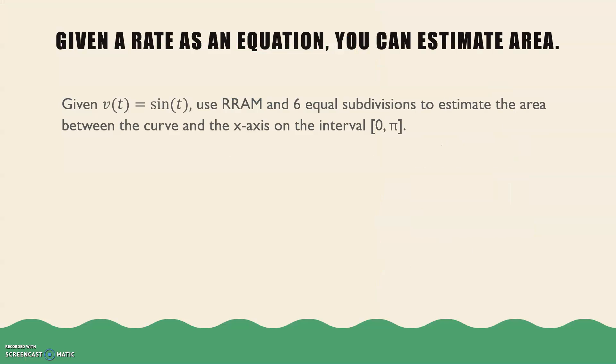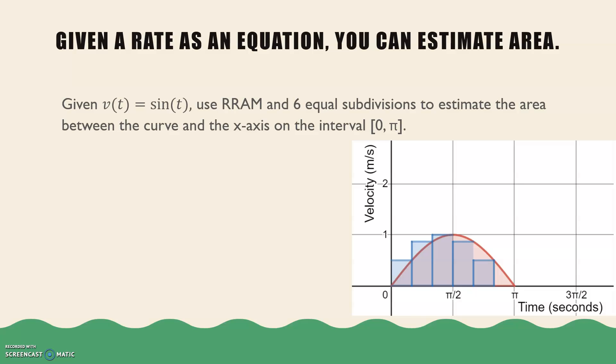A slightly harder problem is looking at your rate as an equation and then estimating the area for that. So if my velocity is sine of t, I can find the distance by looking at the area between the velocity and the t-axis. I'm going to use six rectangles and RRAM to estimate this area. So that means that each of my rectangles would be pi over 6 wide. And it means that I'm going to be using the right side. So I'll be evaluating my sine function first at pi over 6.